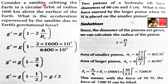Consider a satellite orbiting the Earth in a circular orbit of radius 1600 km above the surface of the Earth. What is the acceleration of the satellite due to Earth's gravitational force?